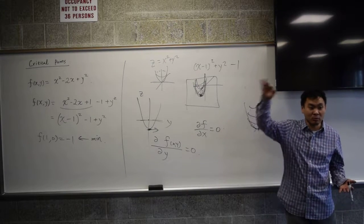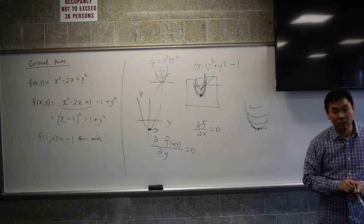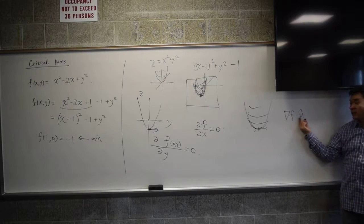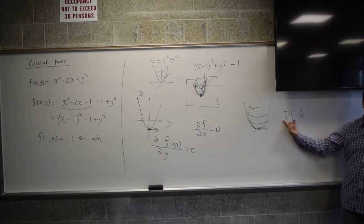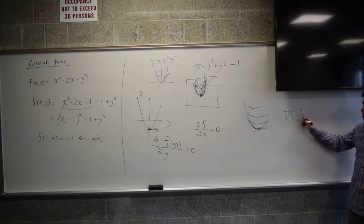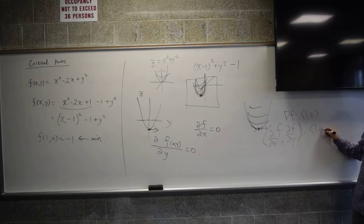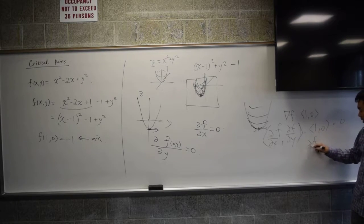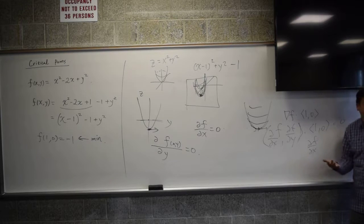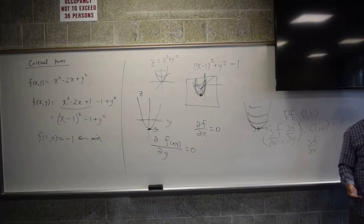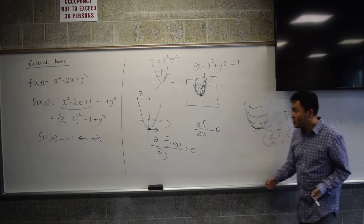All directional derivatives will be zero at the minimum — and this is also true for a maximum. Directional derivatives are the gradient of f dotted with a unit vector u. If this dot product must be zero for any direction u, that means the gradient itself must be zero. More specifically, dotting with (1,0) gives ∂f/∂x = 0, and dotting with (0,1) gives ∂f/∂y = 0. So both partial derivatives are zero, meaning the gradient is zero.